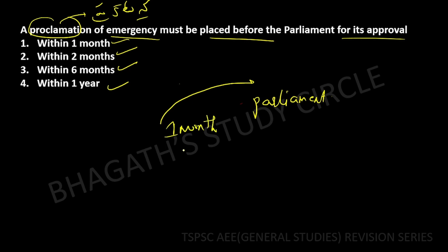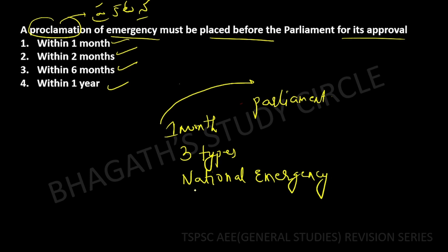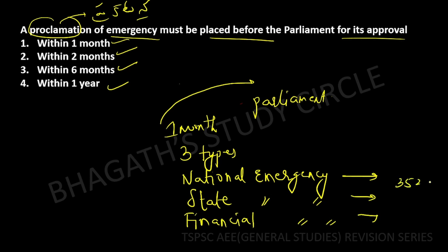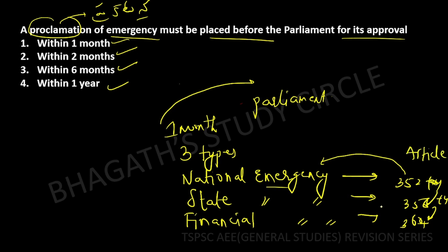There are three types of emergencies: National Emergency under Article 352, State Emergency under Article 356, and Financial Emergency under Article 360. The correct answer is Option A — one month.